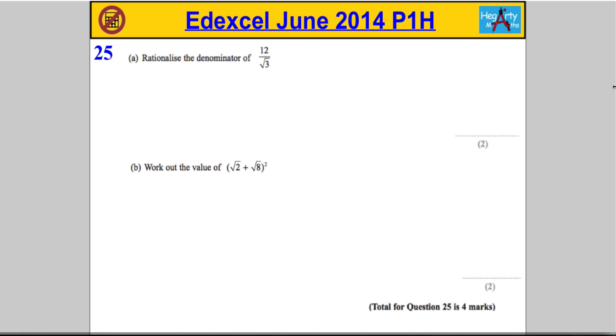Right, so question 25 is a question about surds. Part A, we're asked to rationalize the denominator of 12 over root 3. Now, rationalize means that we are not allowed to have an irrational number in the denominator.